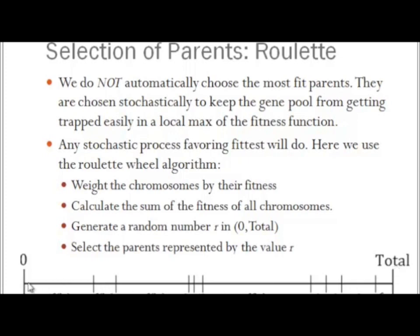We designate on the number line regions assigned to each organism. We draw a random number between 0 and the total. For example, if the total happens to be exactly 10, we choose a random number between 0 and 10. If it turns out to be, say, 6.5, that comes to about here, and so we select organism 6 to be that parent.